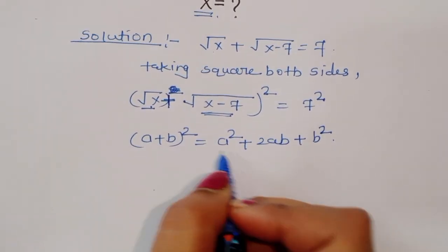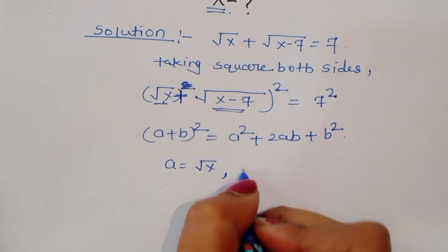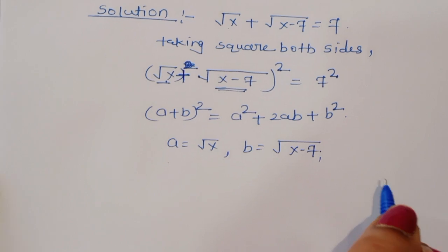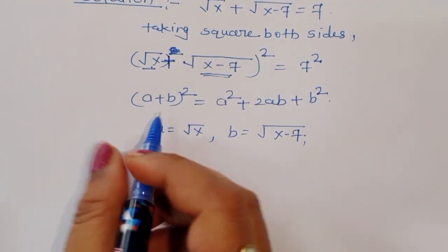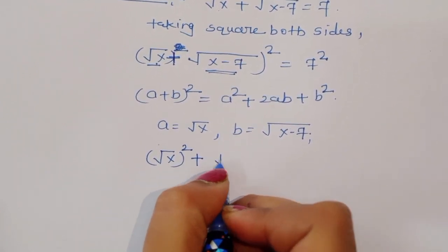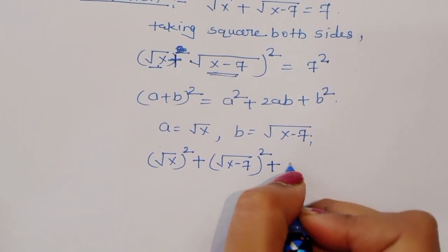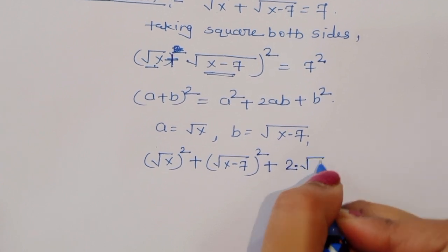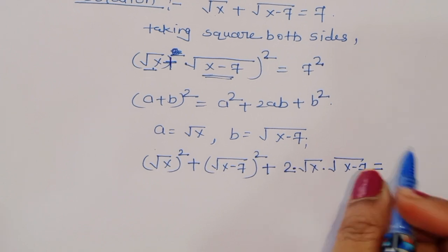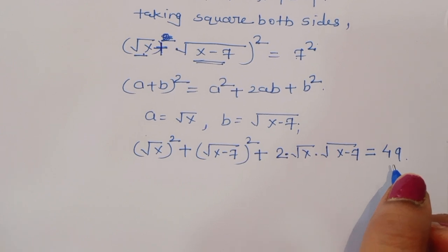We are using this formula here. Then a is equal to square root of x and b is equal to square root of x minus 7. So a squared, that is square root of x whole squared, plus b squared, that is x minus 7, plus 2 times a times b is equal to 7 squared, that is 49.